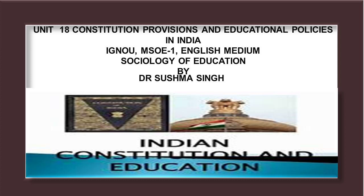The Apprentices Act, 1961 is regarding apprentices and their training. The Persons with Disabilities Act, 1995 — Equal Opportunities, Protection of Rights and Full Participation — is an important step in ensuring equal opportunities for people with disabilities and their full participation in nation building. We see that the policies on education emerged mainly from the Constitution and also from legislation or agencies of the government.